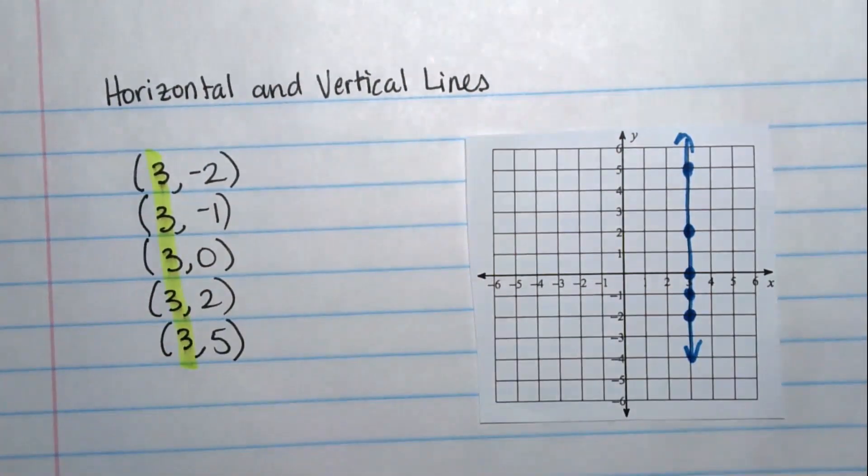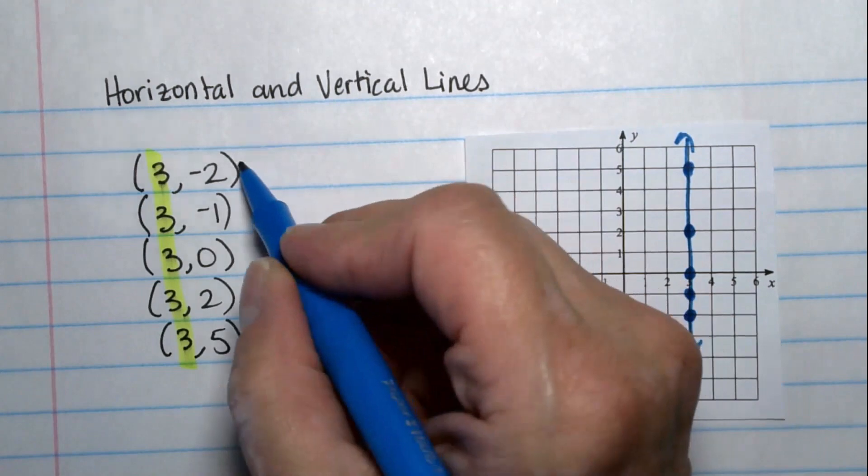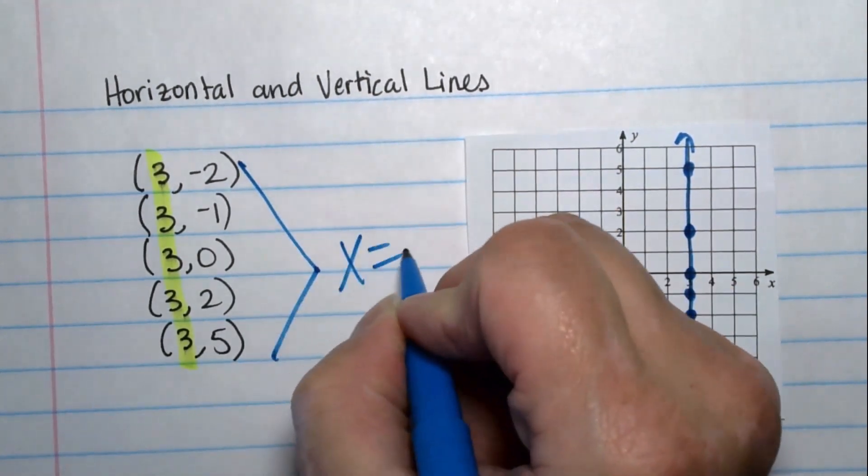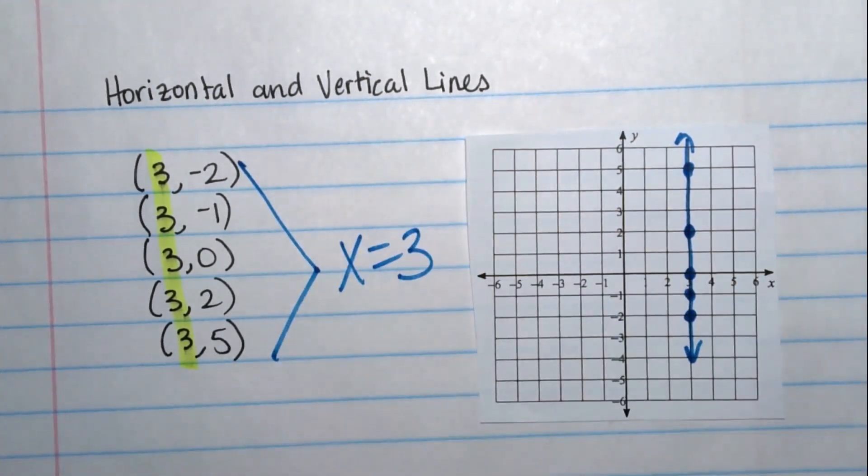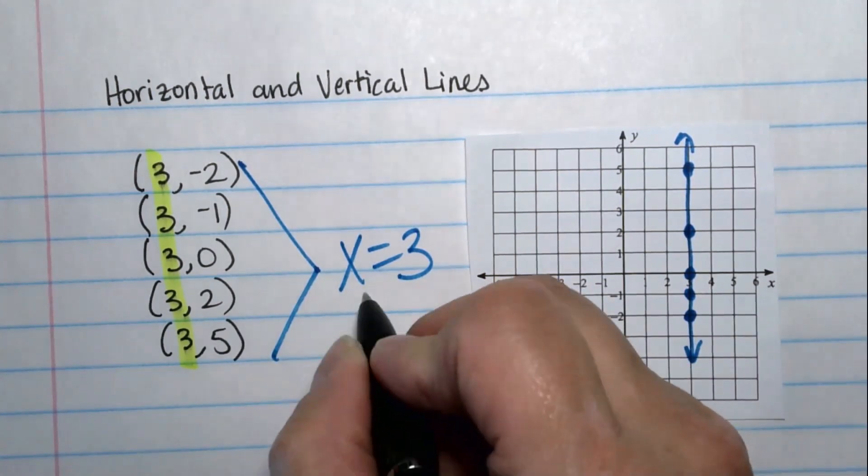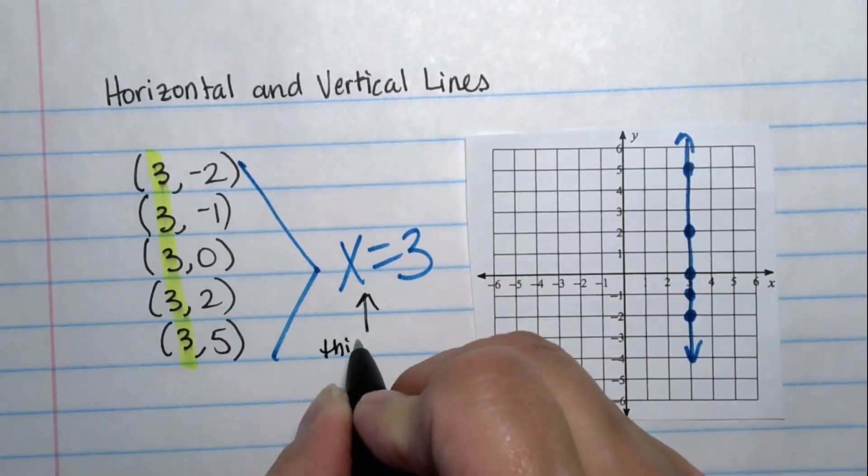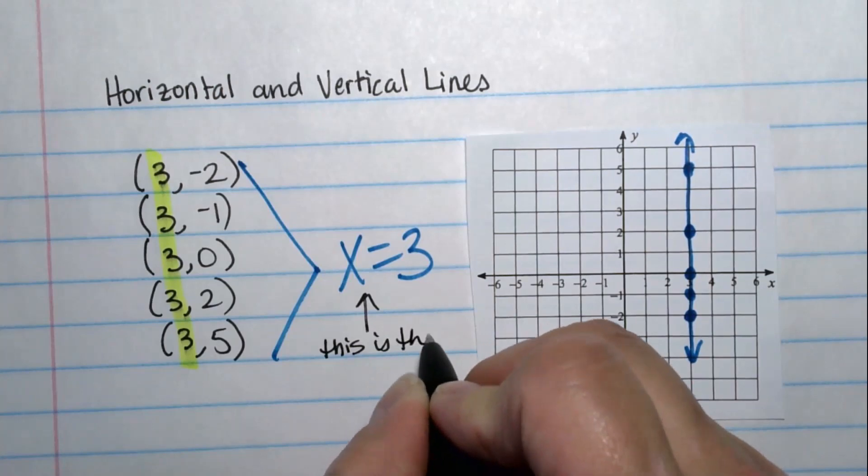So instead of trying to come up with a y equals mx plus b equation or a point slope equation, I'm looking at this and I just want to say x equals 3. That is the equation for the line. This is an equation.